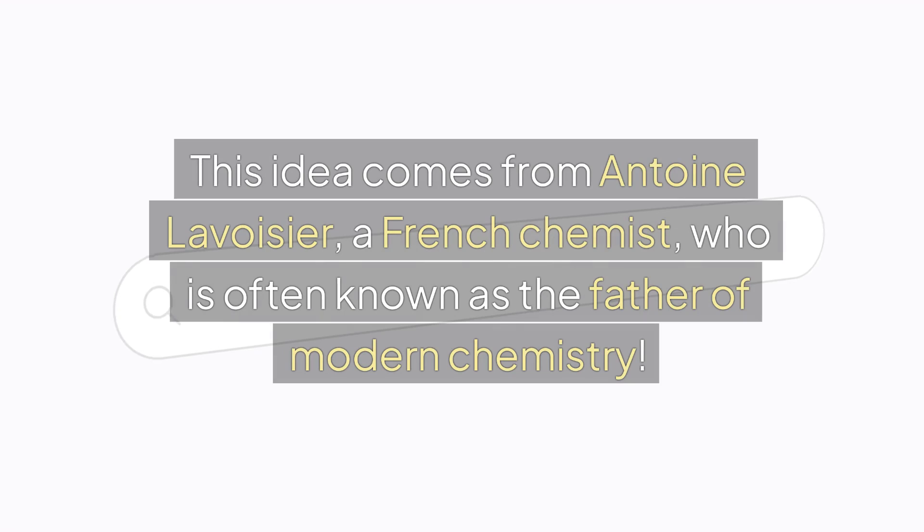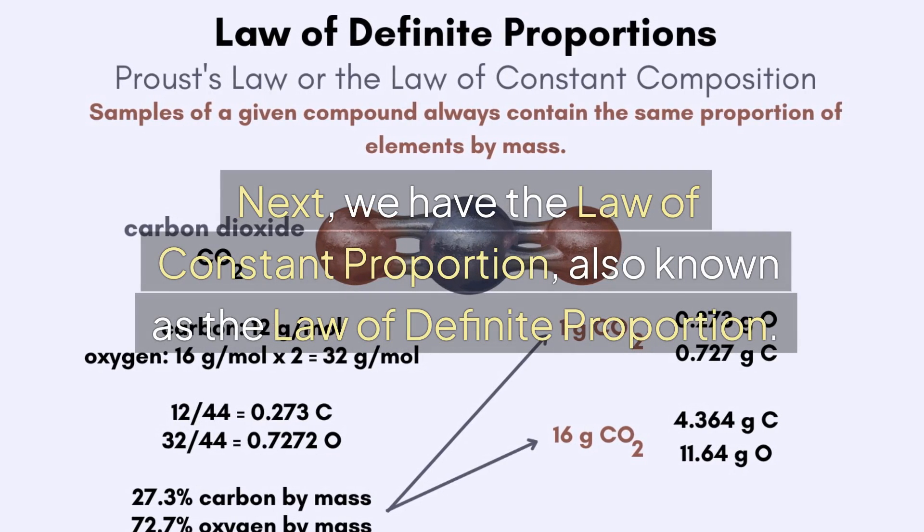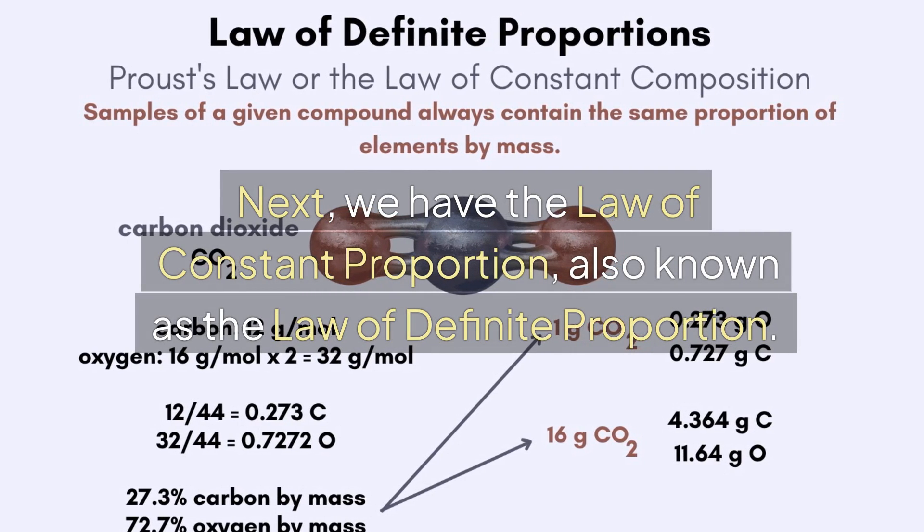This idea comes from Antoine Lavoisier, a French chemist, who is often known as the father of modern chemistry. Next, we have the law of constant proportion, also known as the law of definite proportion.